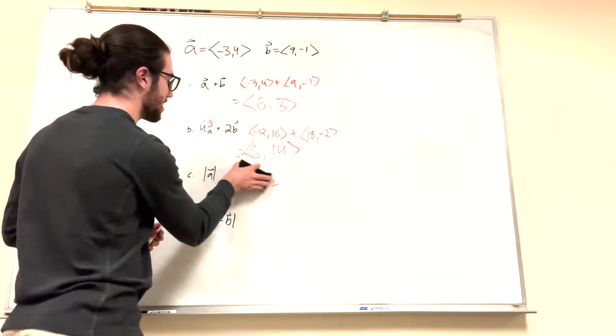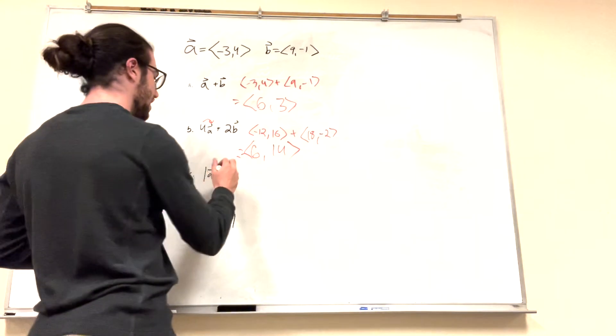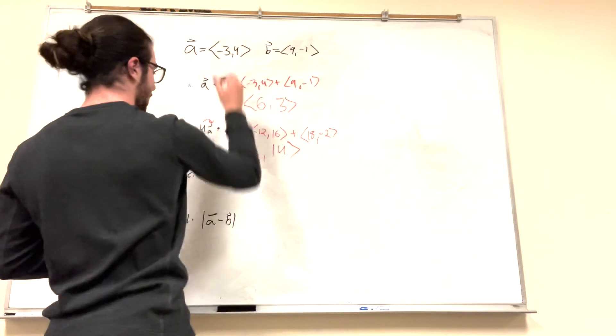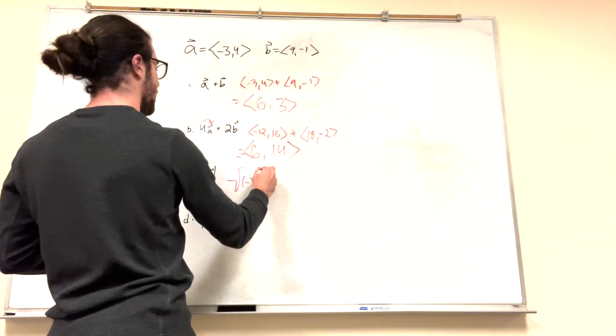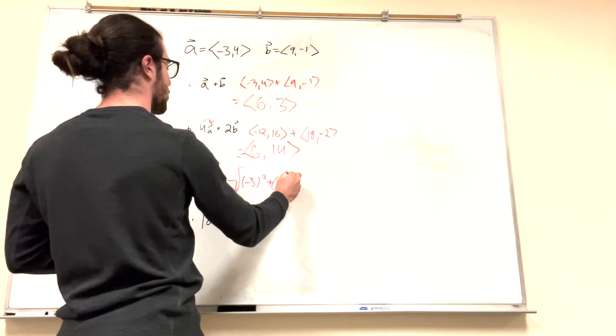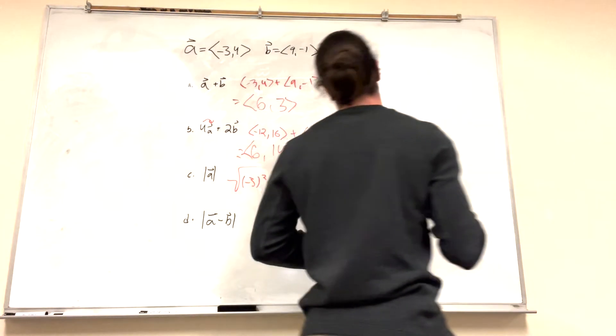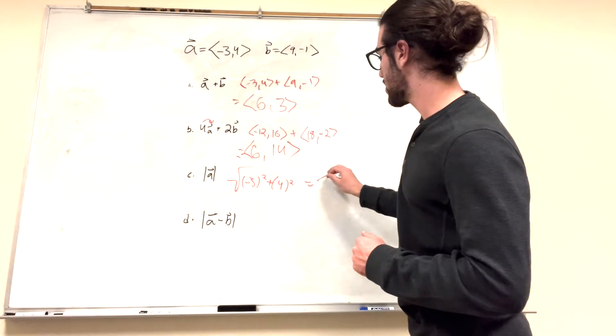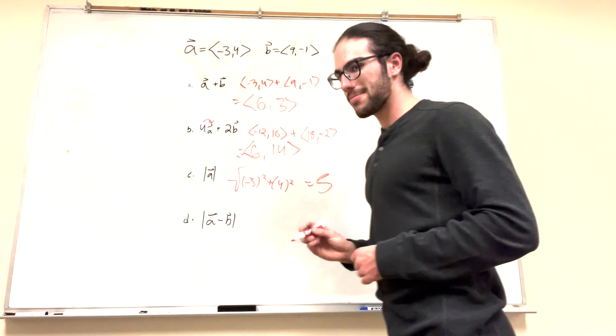But we know our distance formula. It's going to be square root, right? Square root of the thing squared. So it's going to be square root of negative 3 squared plus 4 squared. This is going to be equal to 9, 16. It's going to be square root of 25. It's just equal to 5.